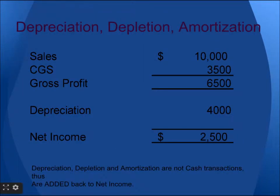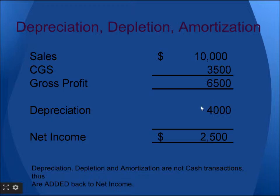We will see examples to understand more. Here we have depreciation, which is a non-cash transaction, so we should add it to net income. Sales minus cost of goods sold gives gross profit, and gross profit minus depreciation gives net income. Since depreciation is a non-cash transaction, for calculating net income for operating activities, we should add this balance back.